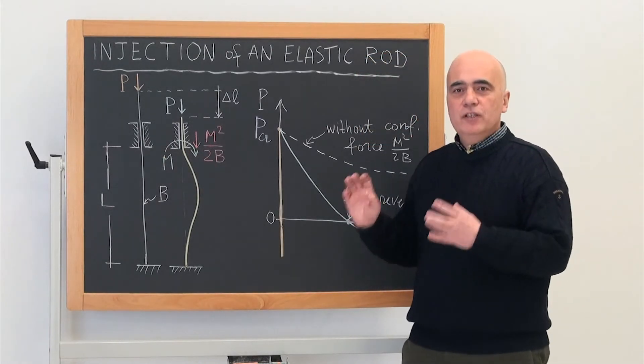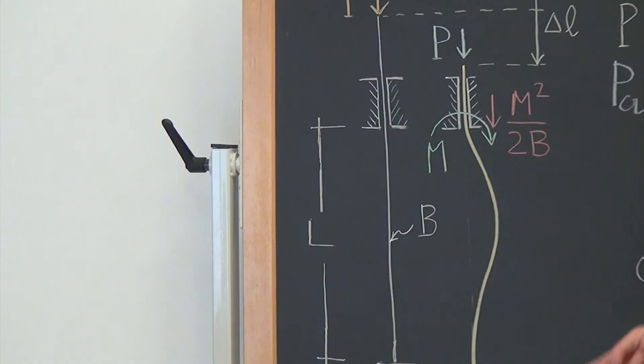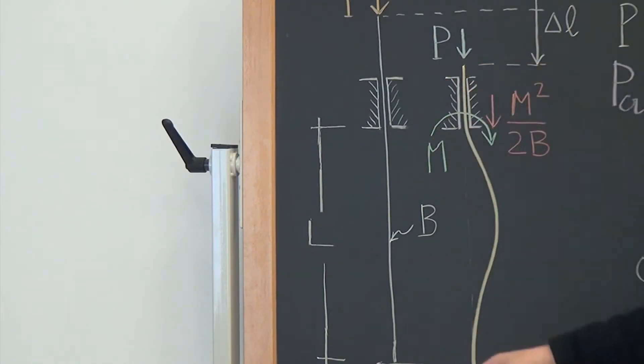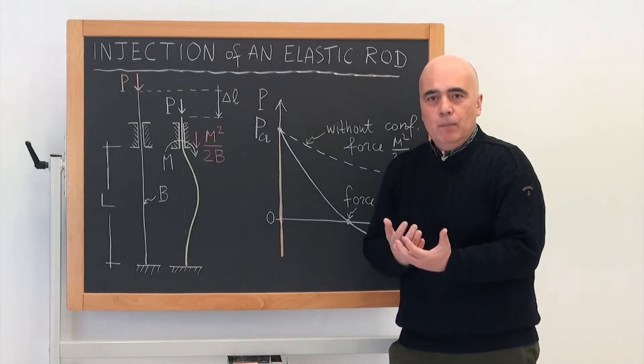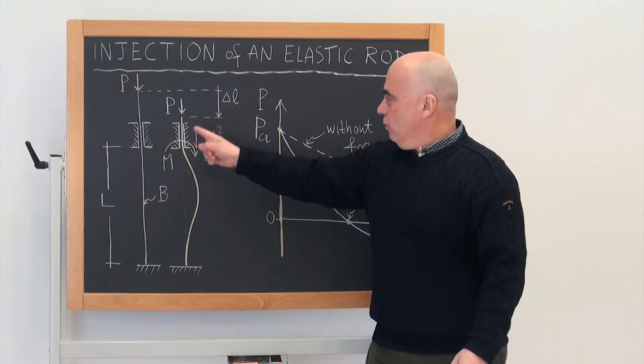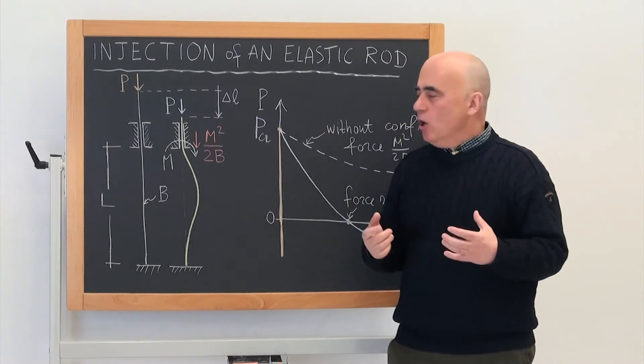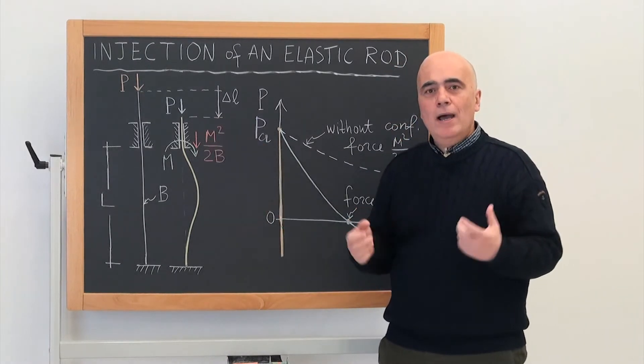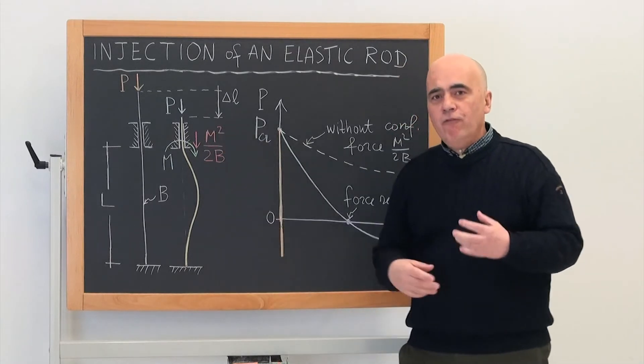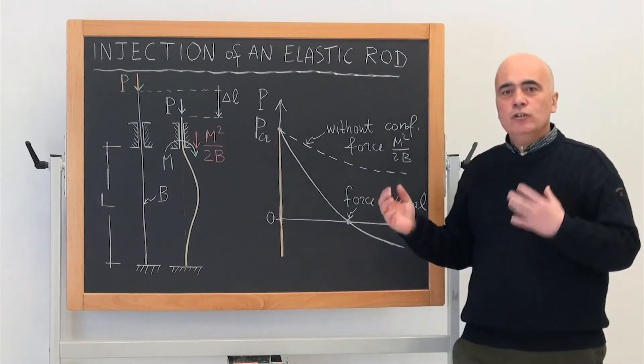The most important feature of this structure is that the length of the rod comprised between the two constraints is variable, and this feature implies that a configurational force develops which is equal to the square of the bending moment divided by 2B, and this configurational force has a strong effect on the structural system.